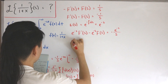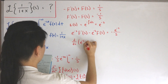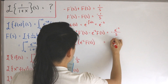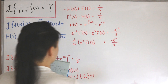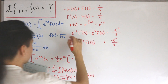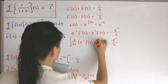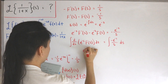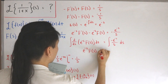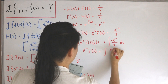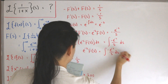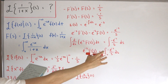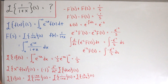Multiplying both sides by e to the negative s, we get: e^(-s) F'(s) minus e^(-s) F(s) equals negative e^(-s) divided by s. Undoing this via the product rule, the left side is just the derivative with respect to s of e^(-s) times F(s), set equal to negative e^(-s) divided by s. Now we integrate both sides with respect to s.